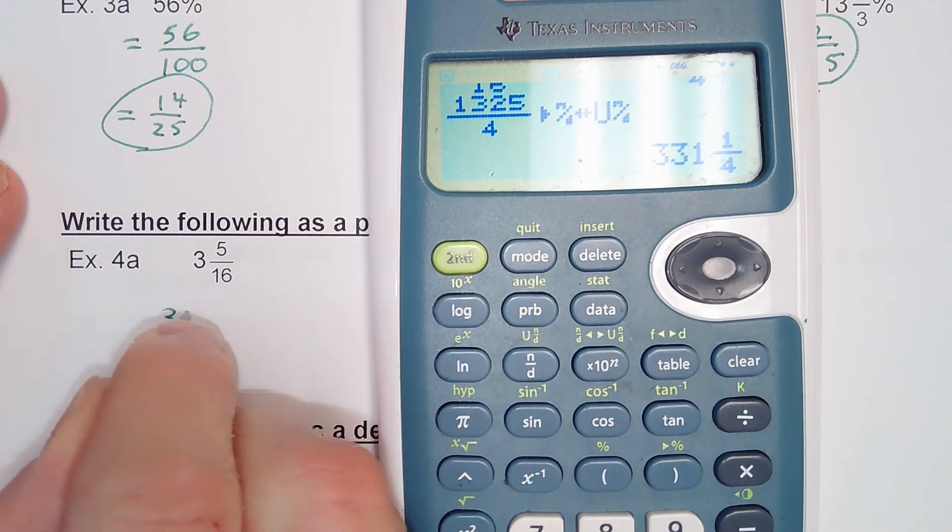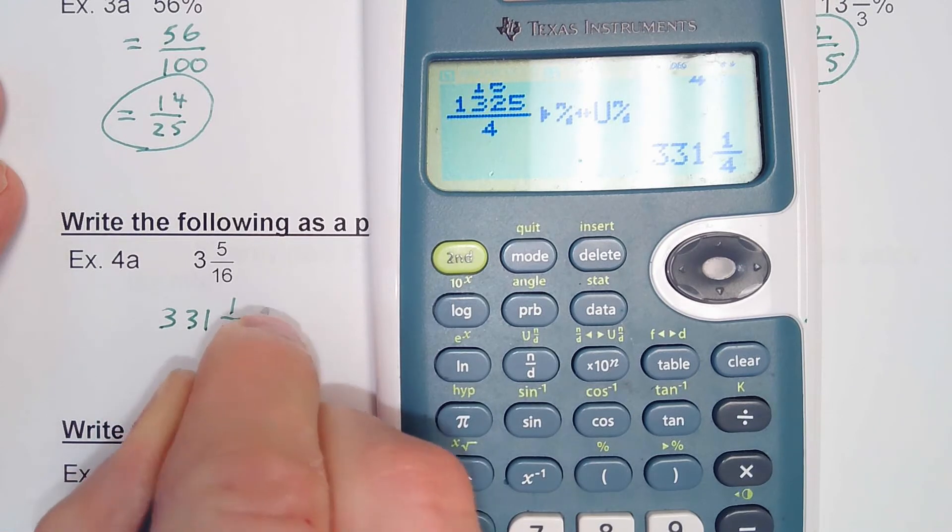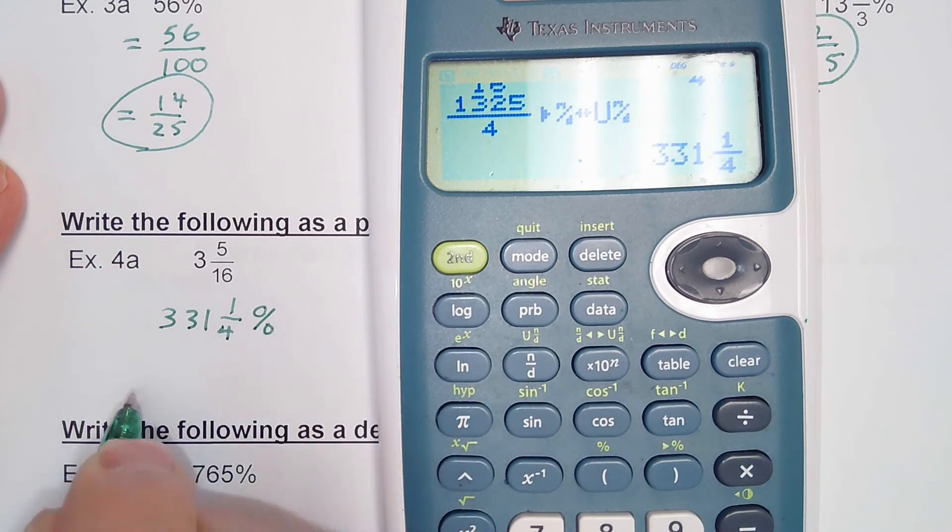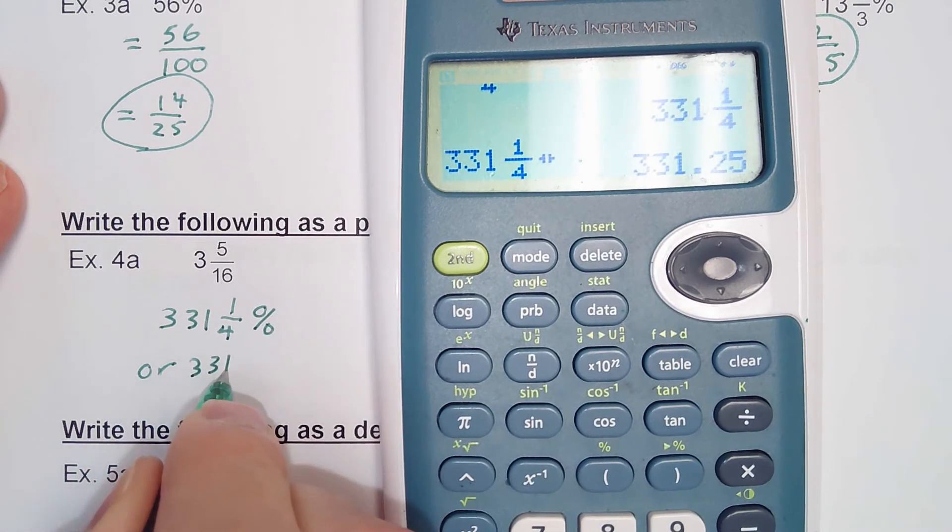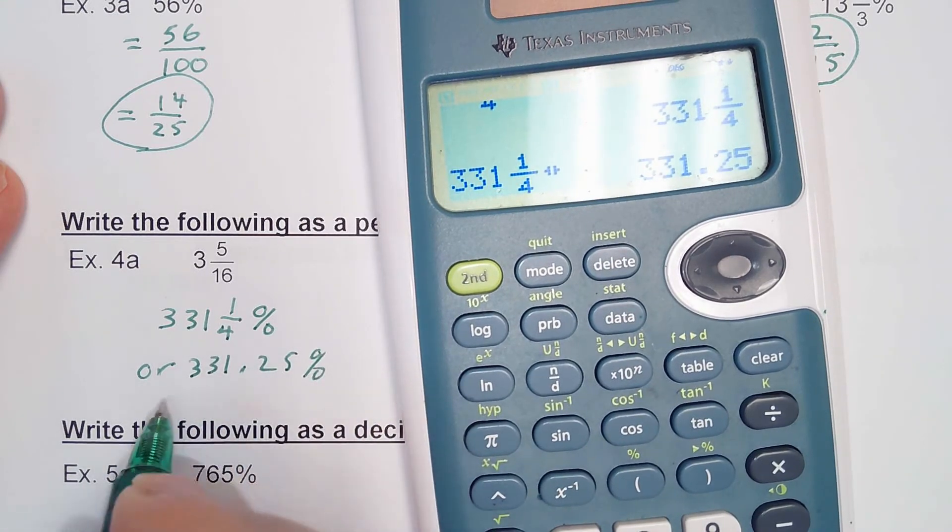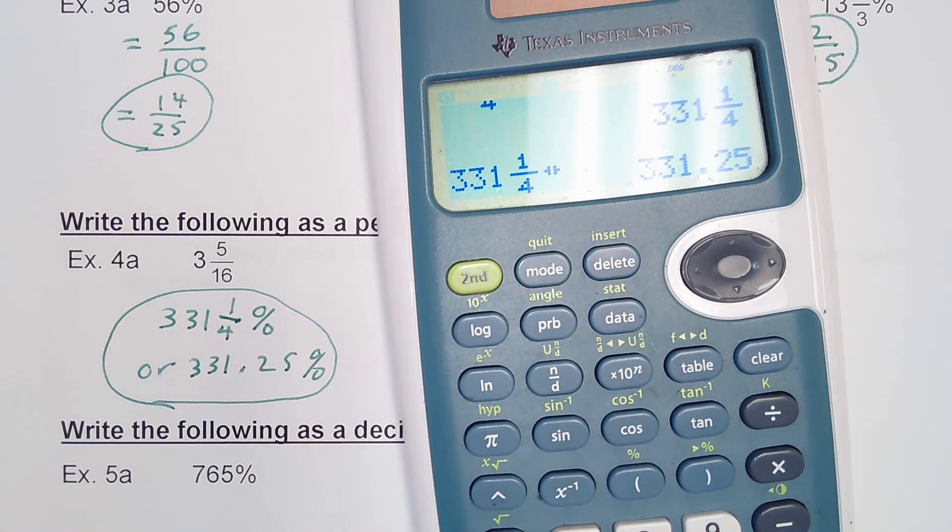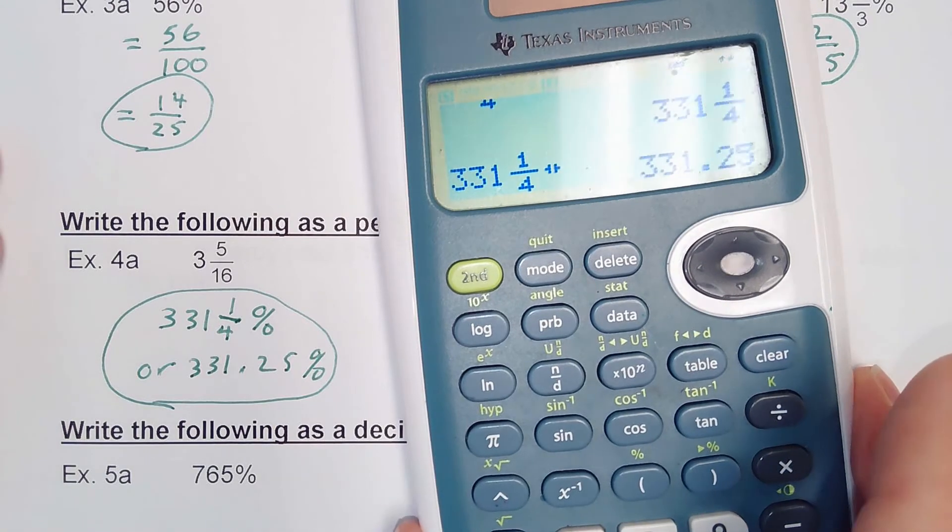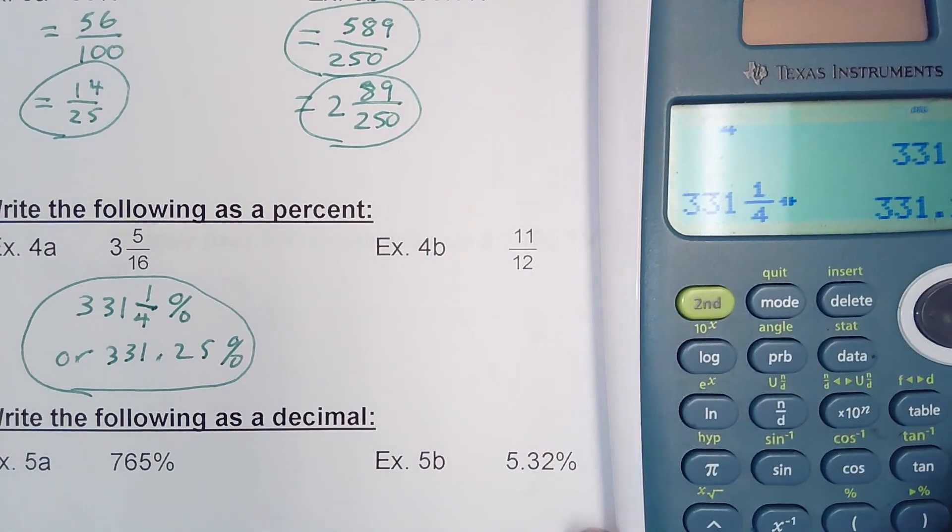So that'd be 331 and 1/4 percent. Or if we do it as a decimal, hit our double arrow key: 331.25%. Very rarely are they going to write a percent as an improper fraction.